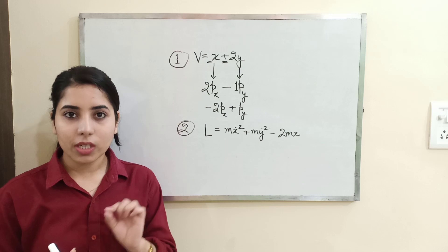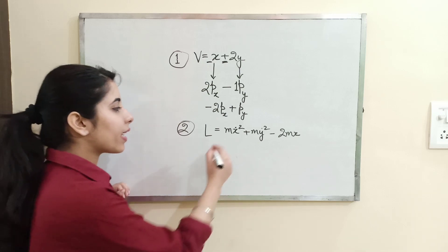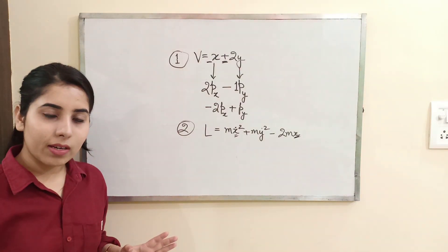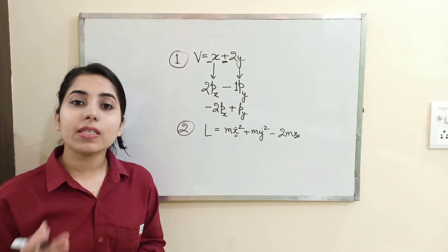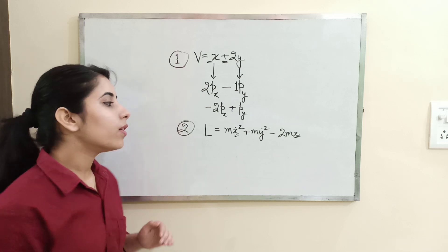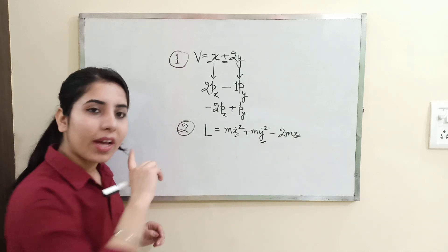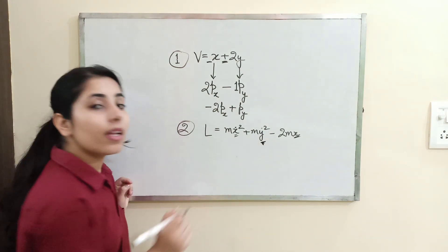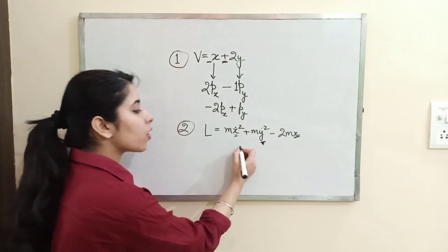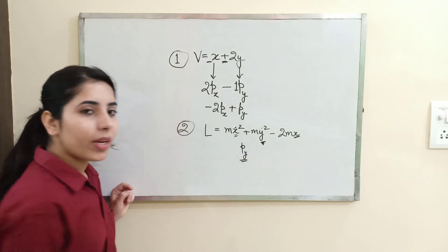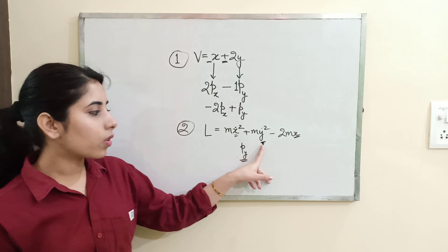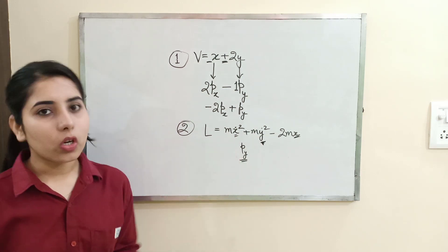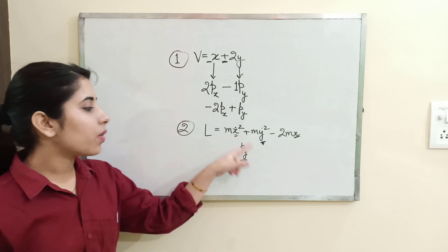This is what we check in the Lagrangian case. The derivative of x is present and x itself is also present, so x is not cyclic right now. The other name for the cyclic coordinate is ignorable coordinate. But if you look at y — y-dot is present but y is not present — so y is cyclic. In this case, the corresponding momentum component corresponding to the cyclic coordinate will be conserved or a constant of motion. So py will be conserved.